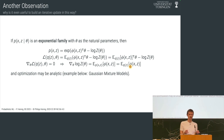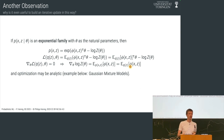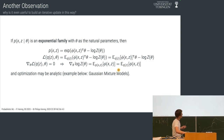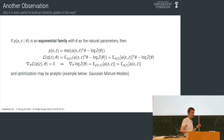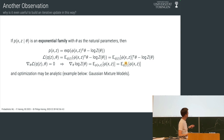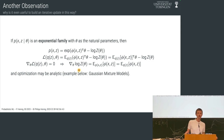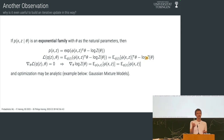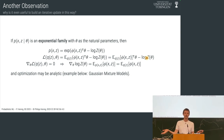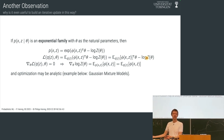For Gaussians, the sufficient statistics are moments — linear and quadratic functions — and expected values of linear and quadratic functions under a Gaussian are known. For the Gamma and Dirichlet distributions, the sufficient statistics are log-counts or log-probabilities, and their expected values are the digamma functions. The M-step then requires setting those expected sufficient statistics equal to the gradient of the log-partition function, which is known — and often we end up with equations that can be solved analytically on paper.